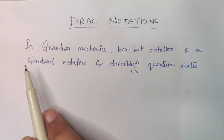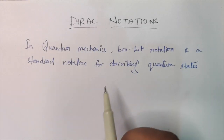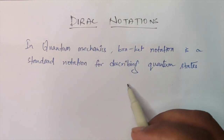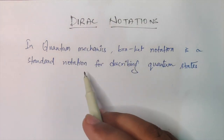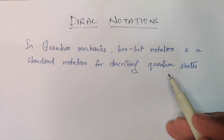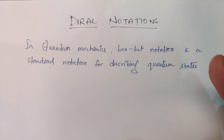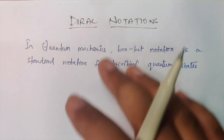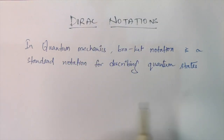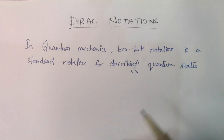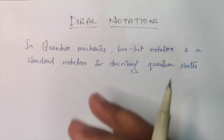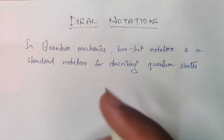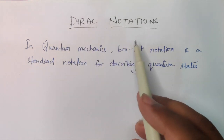Let's talk about Dirac Notations. So in quantum mechanics, this Dirac Notation — also called bra and ket notation — is actually a standard notation for describing quantum states. Basically this notation is used in order to make derivations in quantum mechanics a bit more concise, so they don't take much space. We use Dirac Notation to express things in a standard, more concise form.